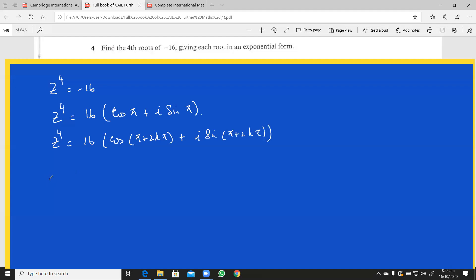So when you take the fourth root, this z becomes 2 e raised to the power iota, and this is π into 1 plus 2k over 4. Now please check if there is any mistake you see.